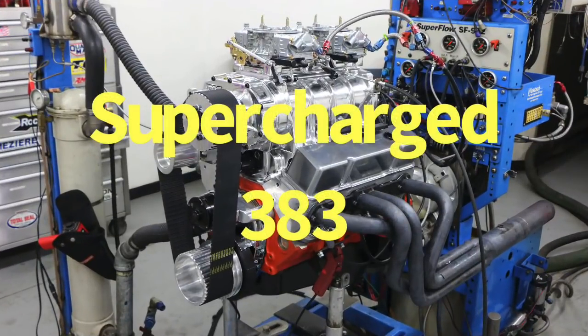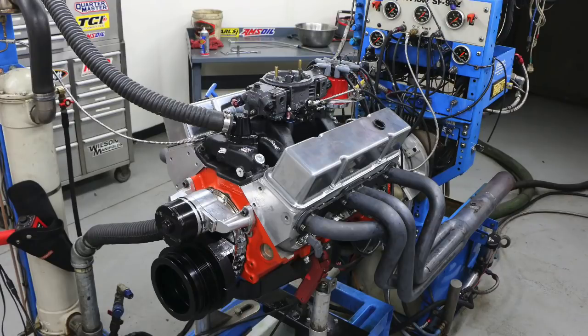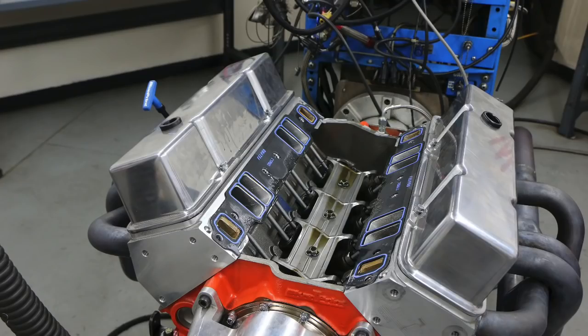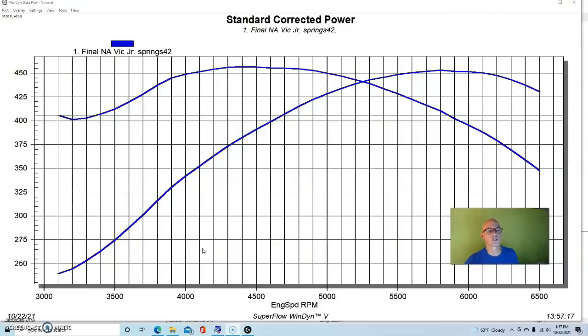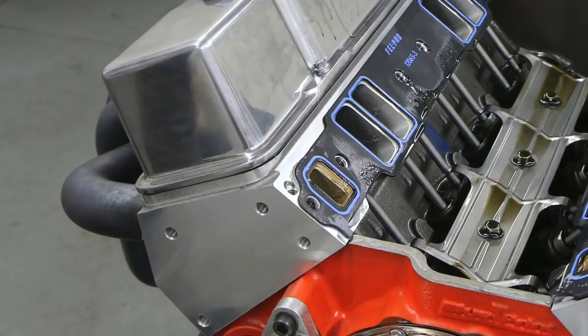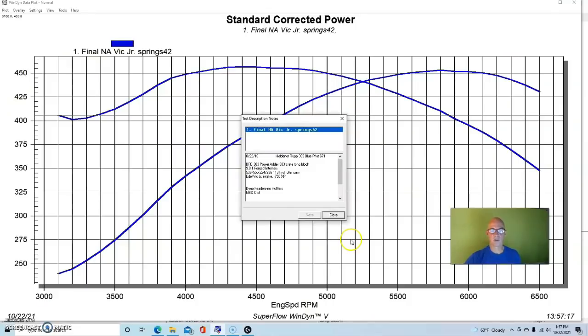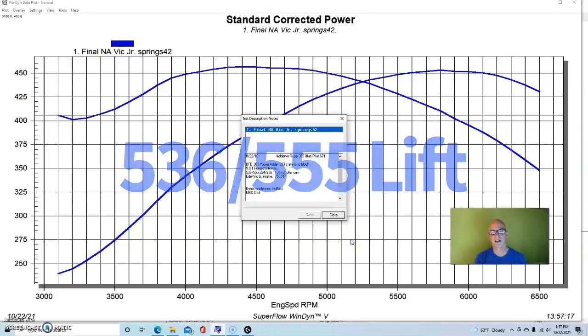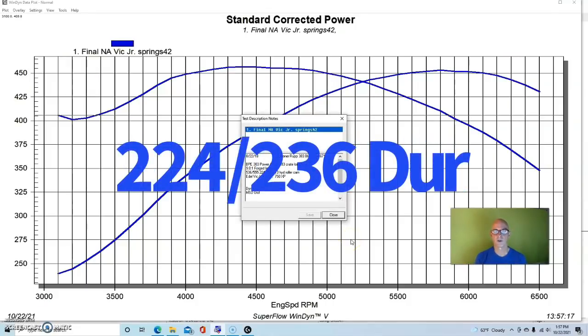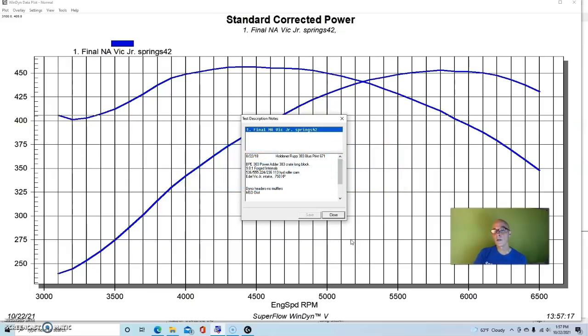Naturally we save the biggest and most powerful for last. This one was a 383 stroker. It was a motor that came from the guys at Blueprint Engines. It was one of their power adder 383 strokers, so it was 9 to 1. It had their aluminum as-cast heads on it. It featured a camshaft, fairly mild, 536/555 lift, 224/236 degree duration split at 113 degree lobe separation angle.